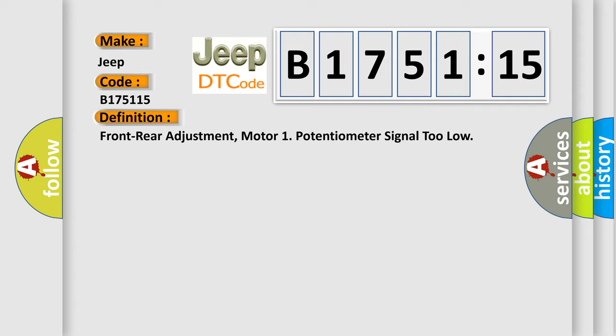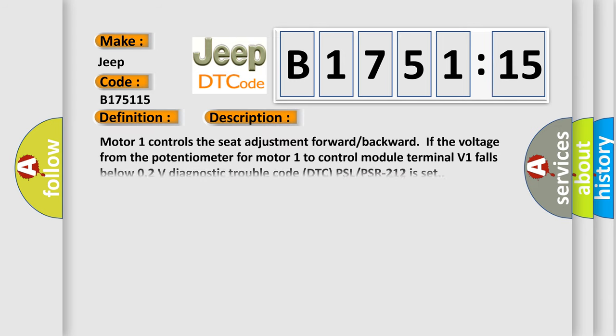The basic definition is front rear adjustment motor 1 potentiometer signal too low. And now this is a short description of this DTC code.